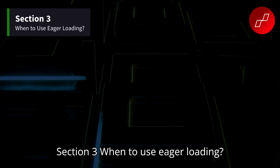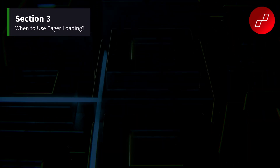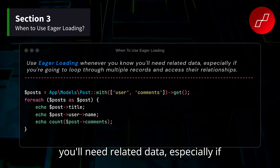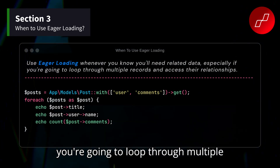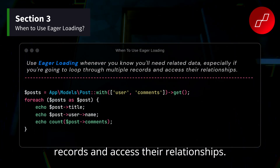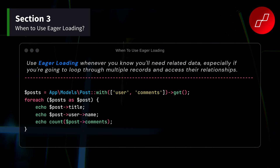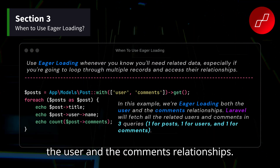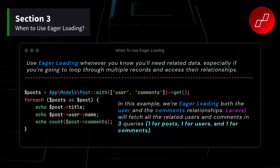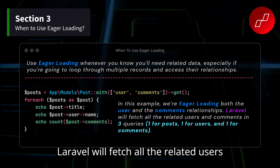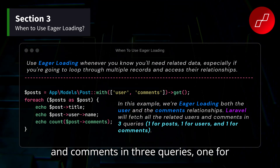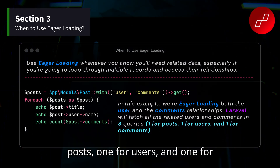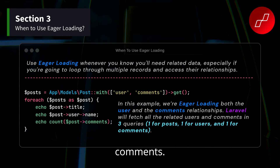Section three: When to use eager loading. Use eager loading whenever you know you'll need related data, especially if you're going to loop through multiple records and access their relationships. In this example, we're eager loading both the user and the comments relationships. Laravel will fetch all the related users and comments in three queries: one for posts, one for users, and one for comments.